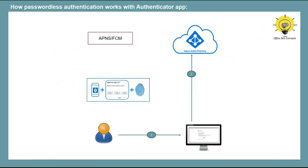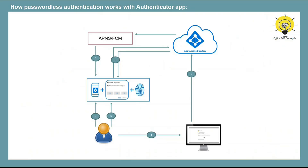If the user is using an iOS device, a notification will be sent to the Authenticator app on his mobile using Apple Push Notification Service. If the user is using an Android device, the notification will be sent using Firebase Cloud Messaging. The user opens the Authenticator app, which connects to Azure AD and receives a proof-of-presence challenge along with an authorization token. The user completes the challenge by entering a PIN to unlock the private key. The authorization token is signed with the private key and sent back to Azure Active Directory, which performs public and private key validation and sends the access token to the client, allowing the user to log in.